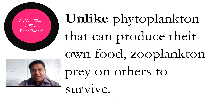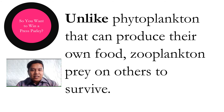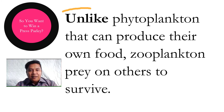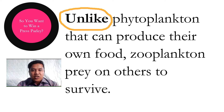Let's look at another example: unlike phytoplankton that can produce their own food, zooplankton prey on others to survive. Again, in this informal definition, we have the signal word 'unlike' to make the definition of phytoplankton clearer.